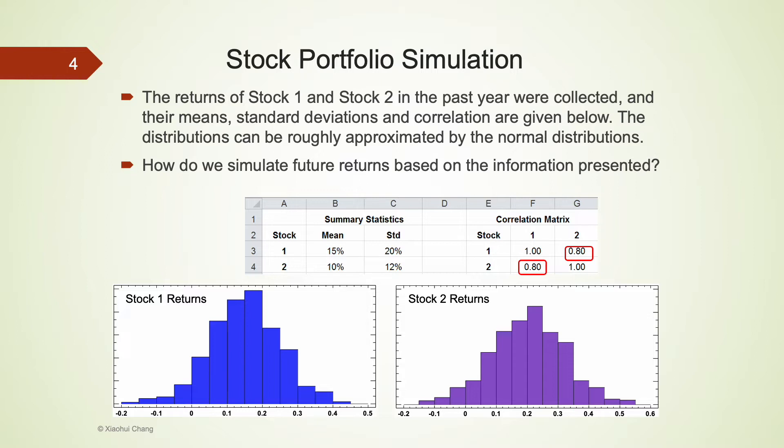The correlation between the two stocks is 0.88, suggesting that both stocks are highly positively correlated and move in the same direction. When the return of one stock is high, we expect the return of the other stock to be high as well.